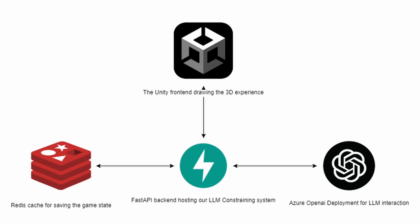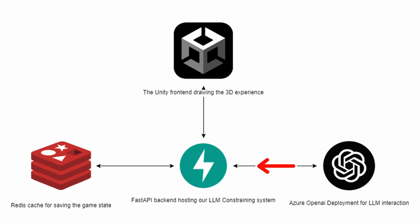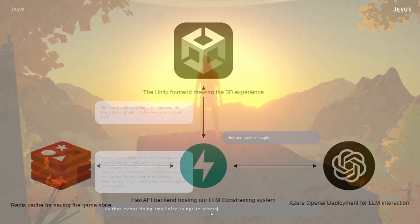To wrap it all up, here is a diagram of the whole app architecture. Our Unity front end sends the user message to our FastAPI backend. The FastAPI backend then requests the Azure Redis cache to receive the current LLM dialog flow state. The backend processes this information and determines the next step in our LLM constraining module. Then requests are sent to the Azure OpenAI deployment, streaming the printable responses of the LLM to the front end until the flow requires a new user input, then it waits for the user and the cycle continues.